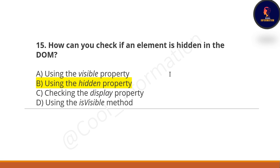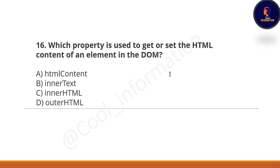Next question: Which property is used to get or set the HTML content of an element in the DOM? Option A: htmlContent. Option B: innerText. Option C: innerHTML. Option D: outerHTML. The correct option is C — the innerHTML property is used for that.